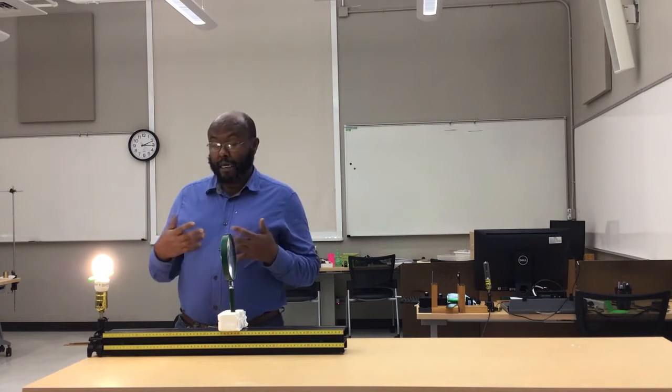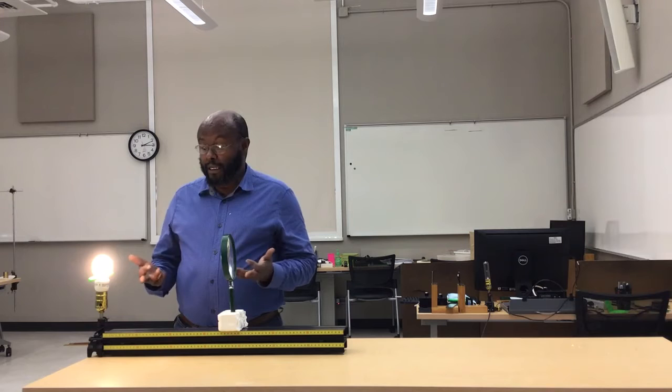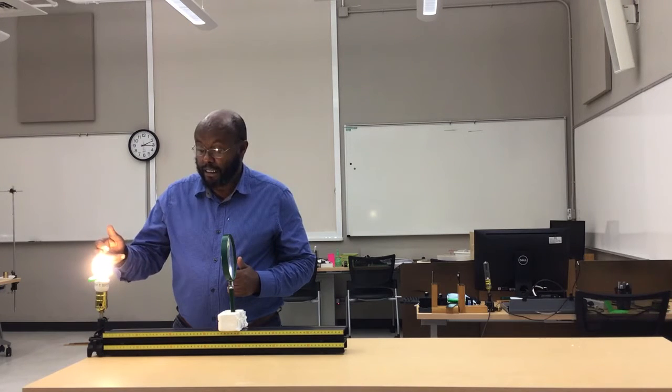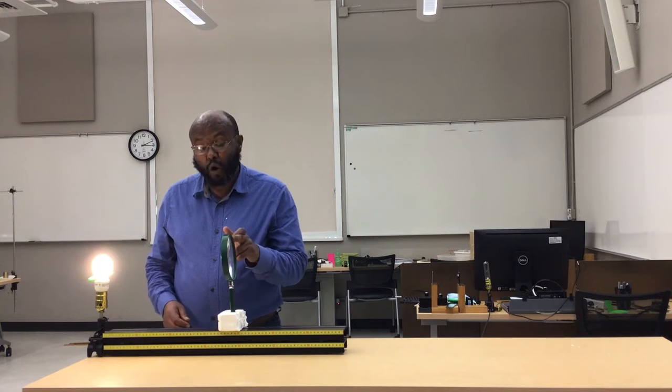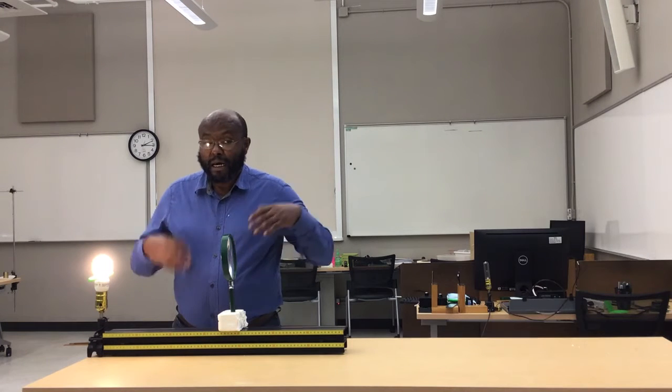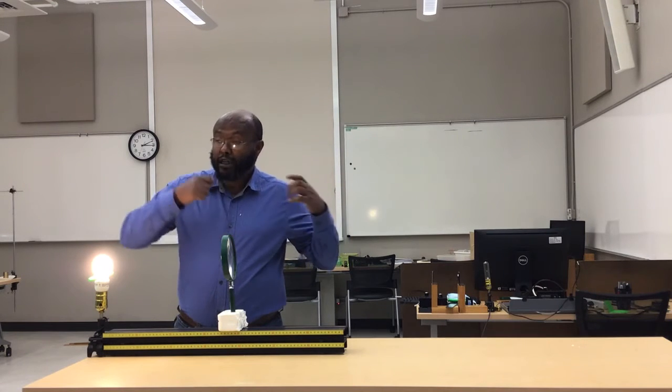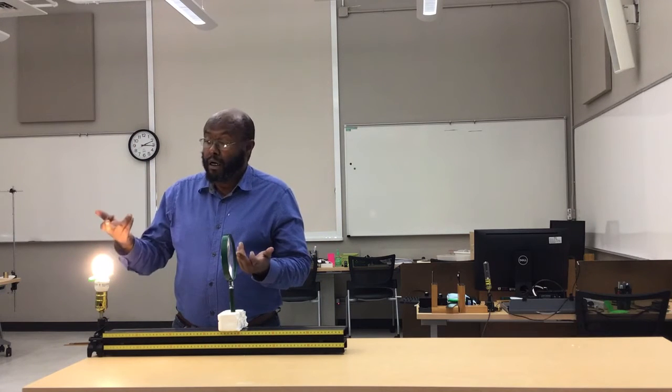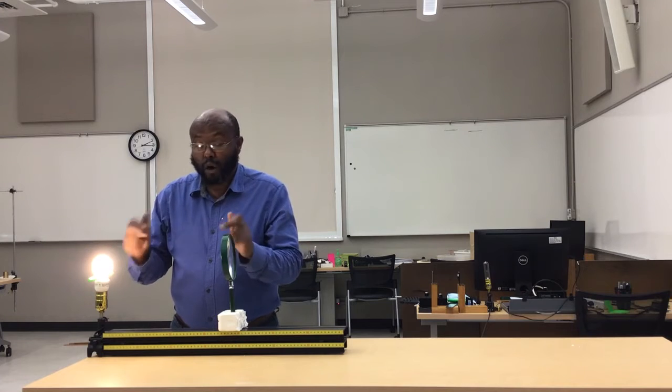Unlike a camera, in the case of a projector, the object, the fluorescent light here, is placed close to the lens. In the case of a camera, the object is far away from the lens. But for a projector, the object is very close.